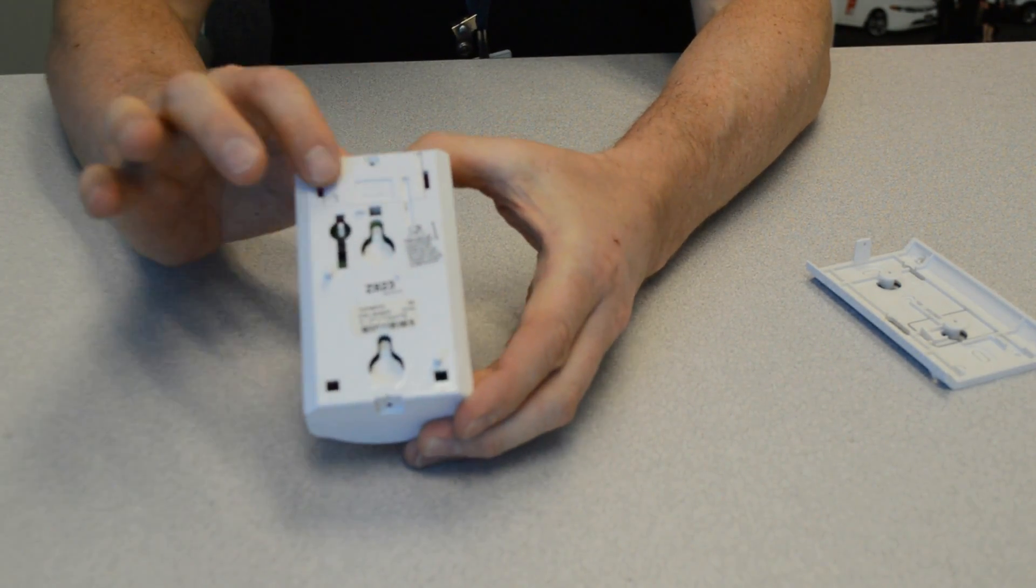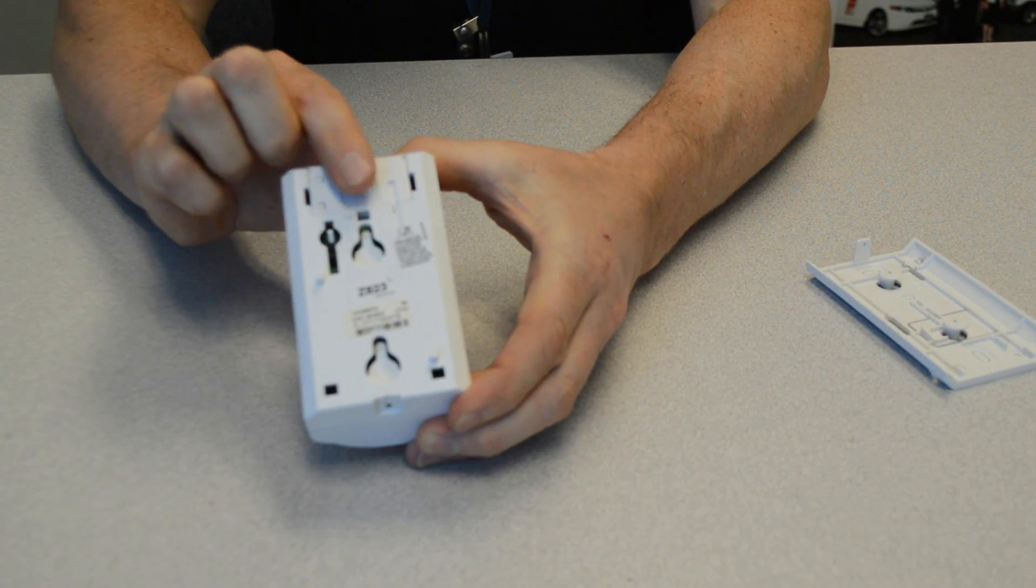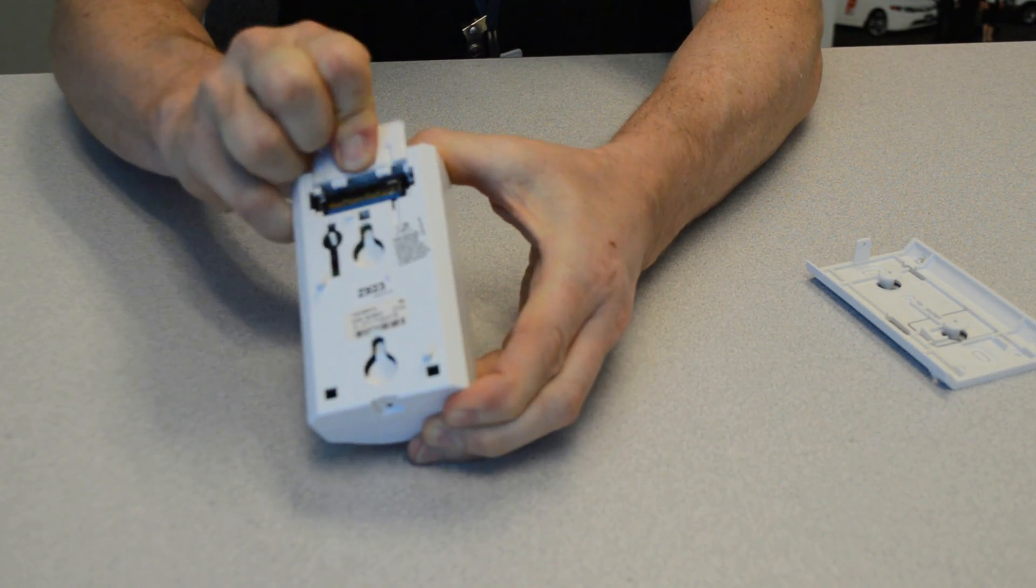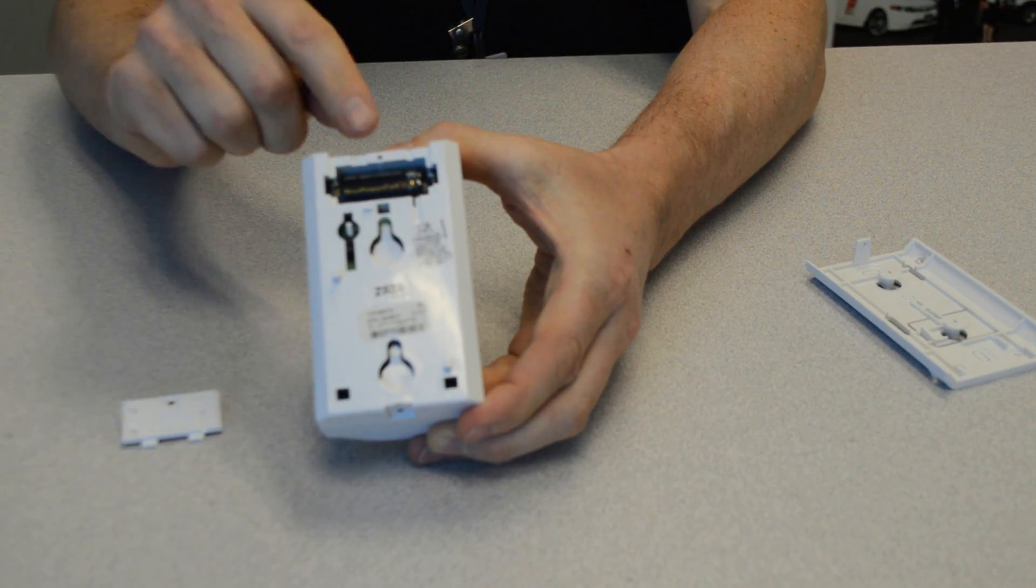Okay, and then in the top part of the motion here there's a little door that covers the battery compartment. Just give that a little bit of a push, and it will come off revealing the battery.